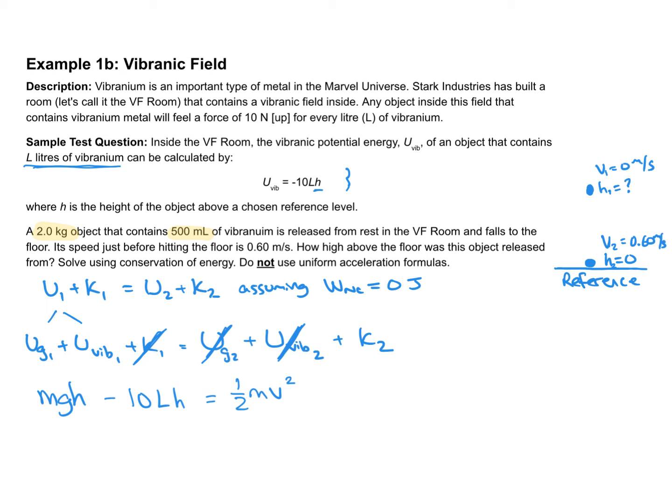I solve for h. That's what the question asks—how high above the floor was this object released from. I'm solving for the initial height, so I've got to isolate h. To do so, I common factor the h on the left side, then divide both sides by mg minus 10L. I'm running out of room, so let's head over to the right side of the page. The height will equal half mv squared divided by mg minus 10L.